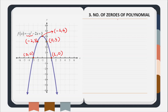Now the third case is the number of zeros of the polynomial. Suppose we are considering this polynomial only. Looking at this graph, can you tell me how many zeros this curve has? We can clearly observe that this parabola is intersecting the x-axis at two points — one and two. So it must be having two zeros. So f(x) = minus x square minus 2x plus 3 has two zeros as seen from the graph. Now let us cross-check it algebraically.